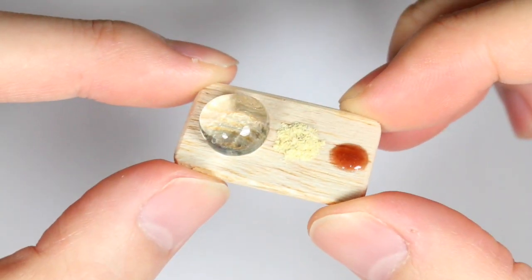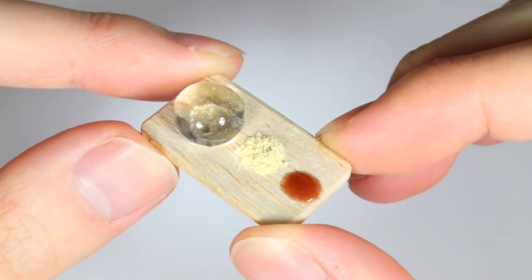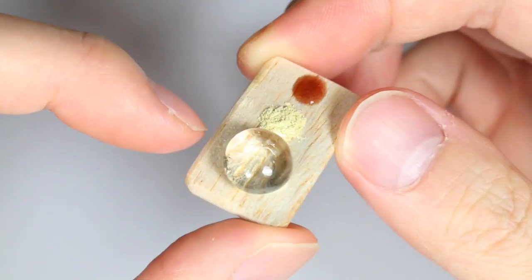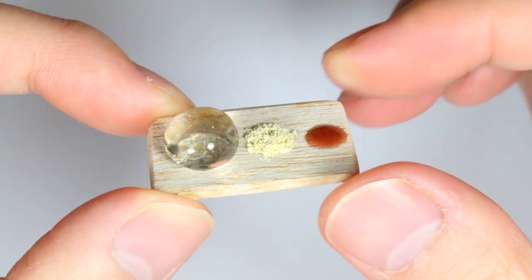So this is how our raindrop cake, our kinako powder, and Kuro Mitsu syrup looks like. And I hope you guys enjoyed this DIY tutorial. Thank you!